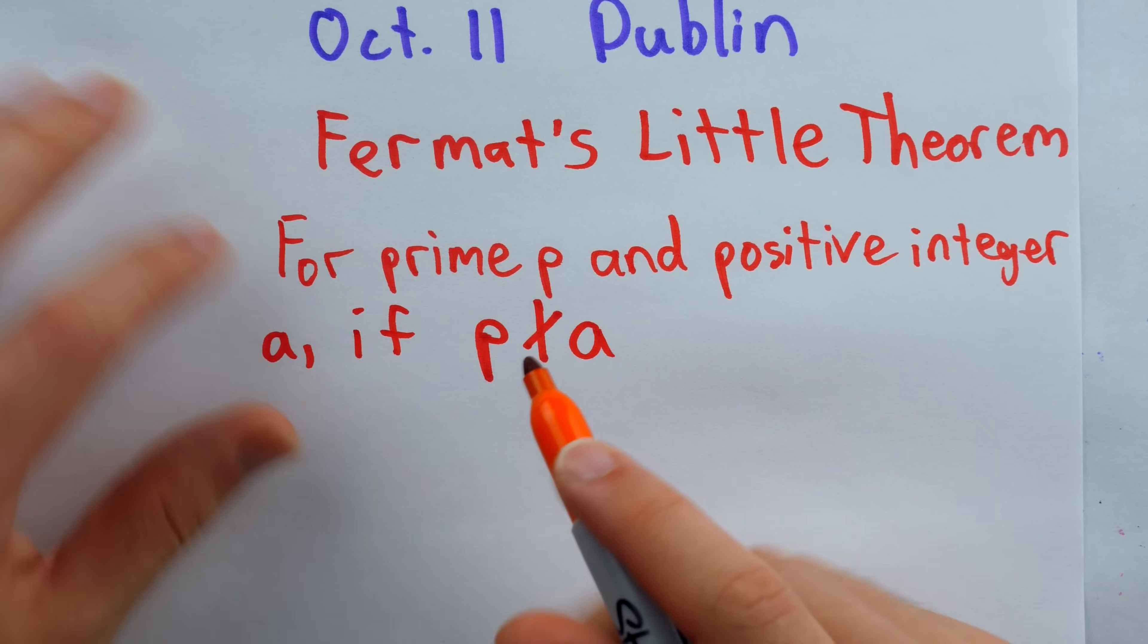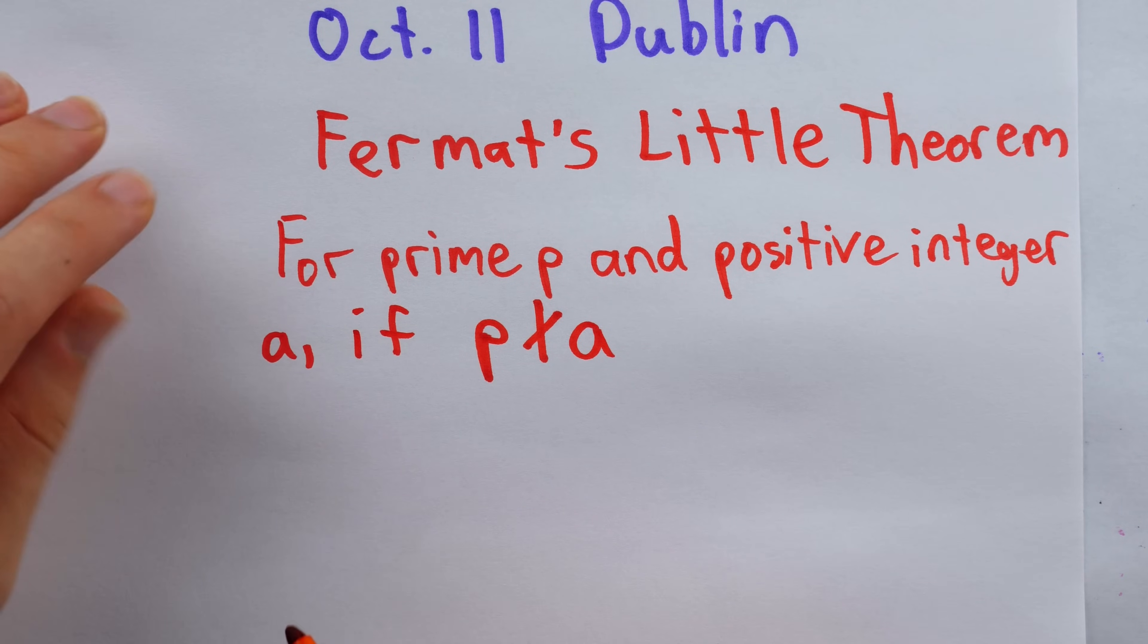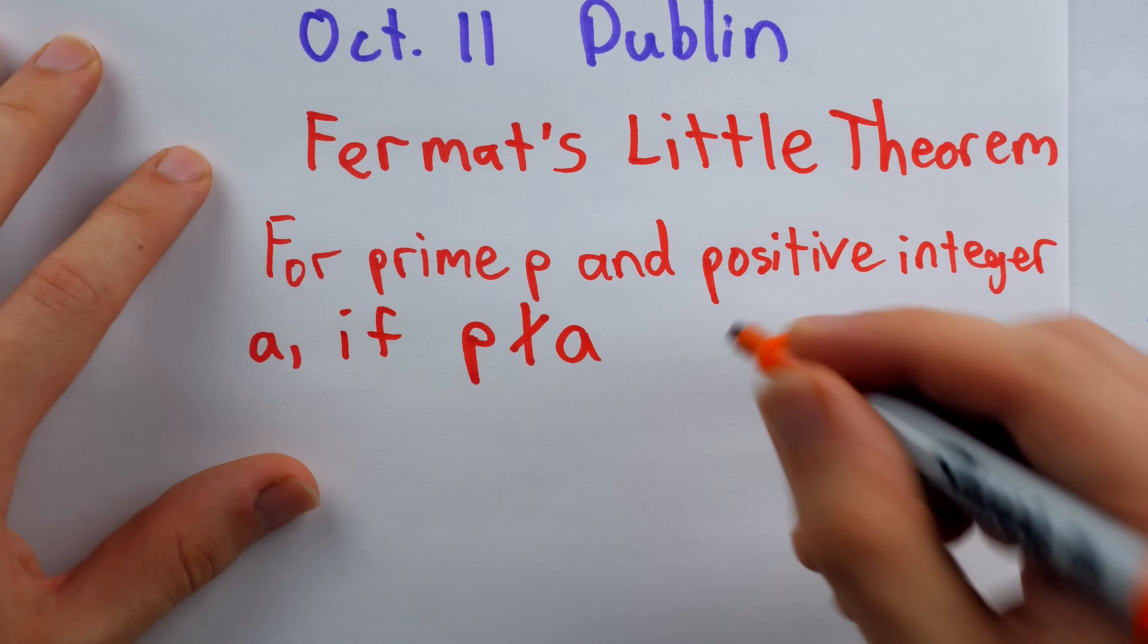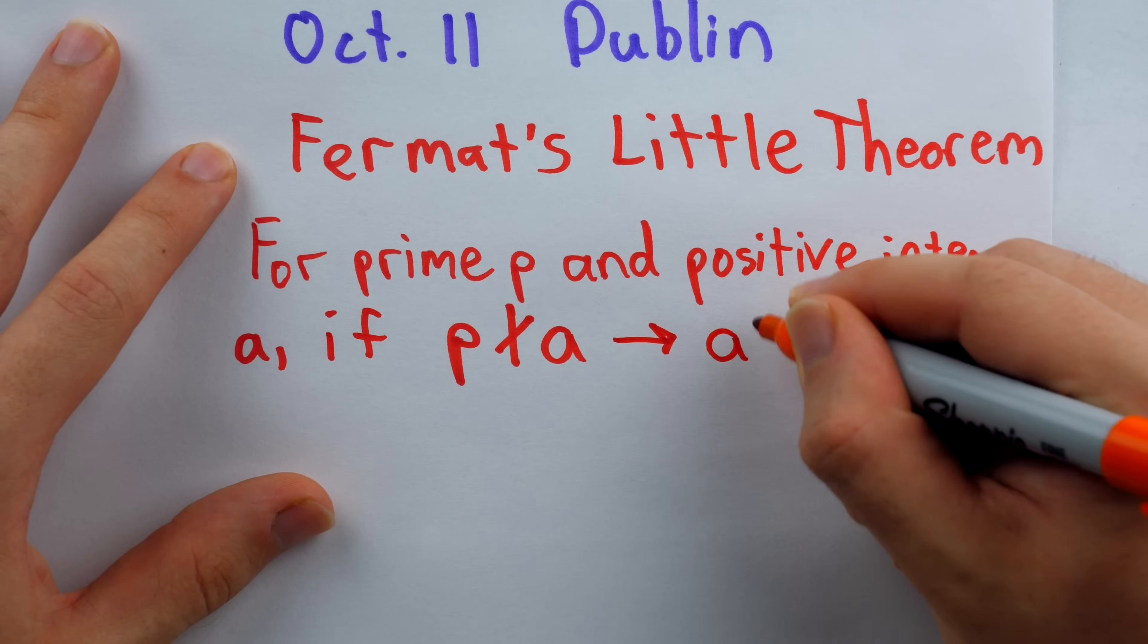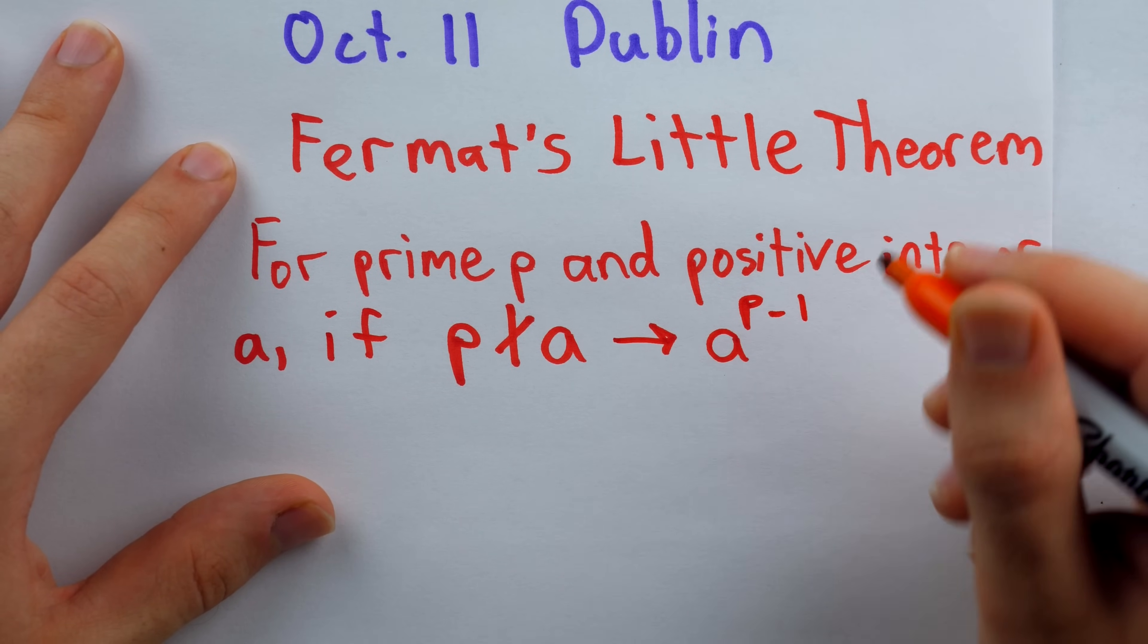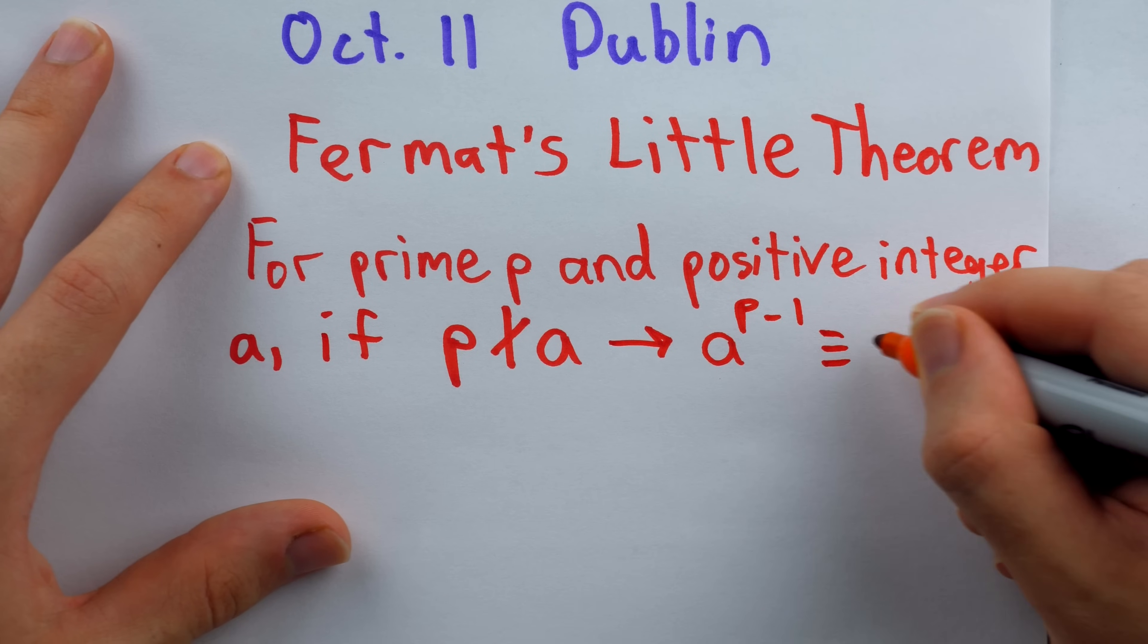For example, a could simply be less than p, in which case it's certainly not divisible by p. If this is the case, what this implies is that a to the power of p minus one is congruent to one mod p.